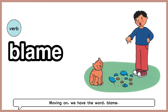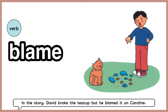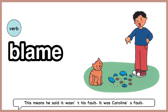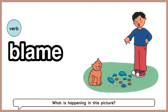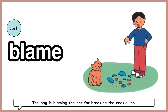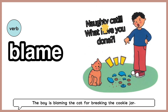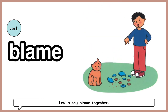Moving on, we have the word blame. In the story, David broke the teacup but he blamed it on Caroline. This means he said it wasn't his fault — it was Caroline's fault. When you blame someone for something, you say that it's their fault and not your fault. What is happening in this picture? The boy is blaming the cat for breaking the cookie jar. Let's say blame together: blame.